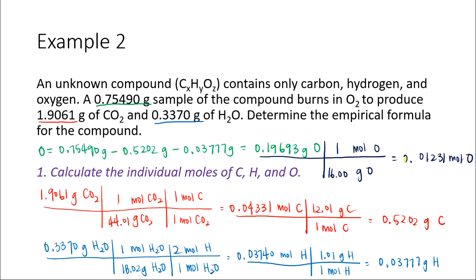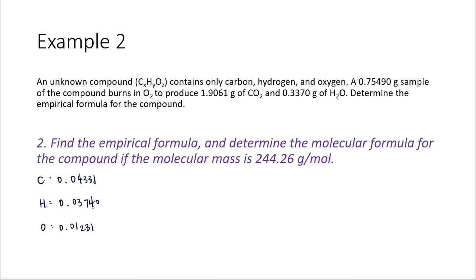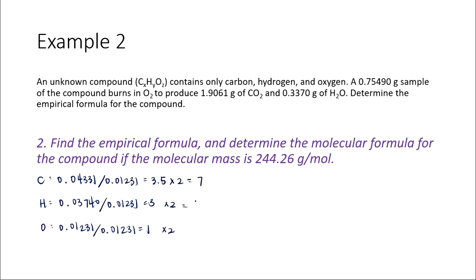Now we use the moles found for carbon, hydrogen, and oxygen to write the empirical formula in the order C, H, O. Dividing all values by the smallest, 0.01231, and because we get a half-number we multiply everything by 2 to get whole numbers: 7, 6, and 2. So our empirical formula is C7H6O2.